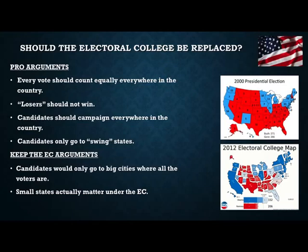The other argument is that under the Electoral College, small states actually have more power and they matter. If you got rid of it and elected the president based on popular vote, places with small populations would basically get ignored — you might never see a presidential candidate if you lived in a small state without a major city. Then there's the historical argument: this is the system we've had since the Constitution was ratified in 1787, and the instances where a popular vote loser won have not been very often.